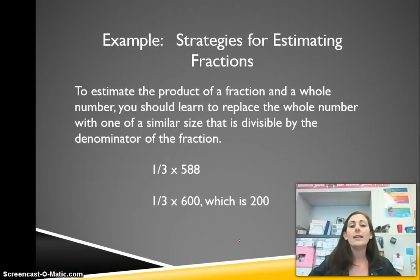Then an example of another way would be when you take a fraction times a whole. To estimate the product of a fraction and a whole number, you should learn to replace the whole number with a similar size that is divisible by the denominator of the fraction. So when we look at one-third, our denominator is 3, and we have times 588.